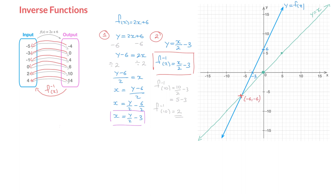A fundamental rule to always remember is that if y = f(x) passes through a point with coordinates (a, b), then the inverse function has to pass through the point with coordinates (b, a). This is true for every single point the graph of f(x) passes through. We can see that f(x) has an x-intercept at x = negative 3 — in other words, it crosses the x-axis at the point (−3, 0). Using the rule above, this tells us that the inverse function has to pass through the point (0, −3), which is on the y-axis.